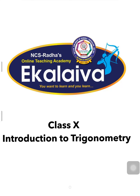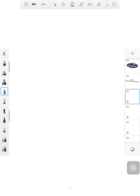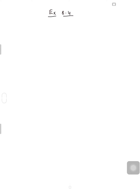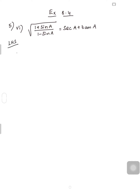Shri Gurubhya Namaha students. Let me continue with exercise 8.4, Roman numeral 5, 6th sum. You have to prove that the square root of (1 + sinA) / (1 - sinA) is equal to secA + tanA. Here you have to prove LHS is equal to RHS. Let me take the LHS, that is the square root of (1 + sinA) / (1 - sinA).